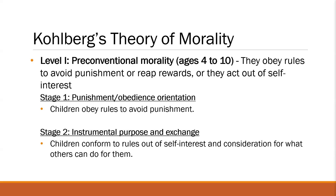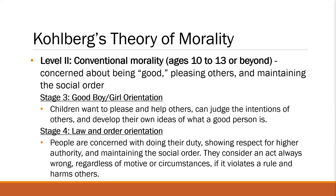That's for the first level — pre-conventional morality, highly common among children. What about Level 2? We have conventional morality, common among teenagers, and some adults are still in this stage. The people in this stage are concerned about being good, pleasing others, and maintaining social order. In Stage 3, we have the good boy, good girl orientation — they want to please others, help others, and be good.